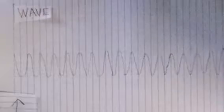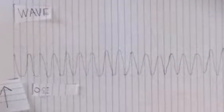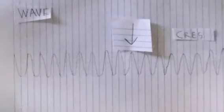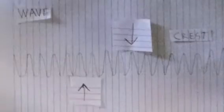The point at which a wave originates is called the oscillation. The top parts are called crests and the bottom parts are called troughs.